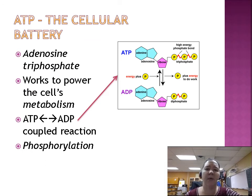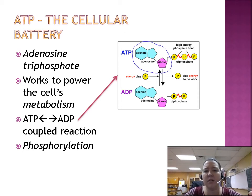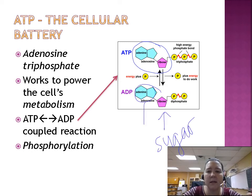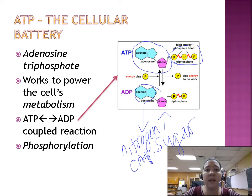ATP is the cellular battery — adenosine triphosphate — and it works to power cell metabolism. ATP is made of adenosine, which is an adenine and a ribose (a sugar), and phosphate groups. We'll talk more about adenosine when we get to DNA. Cellular respiration is basically the process of phosphorylation, where we add that third phosphate group.